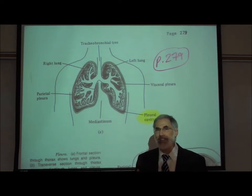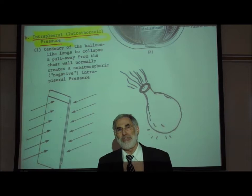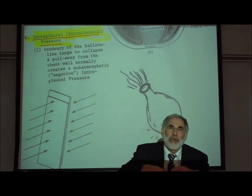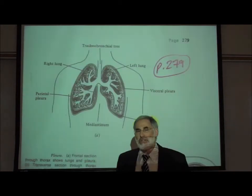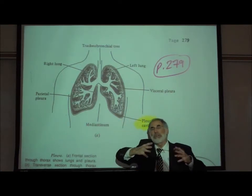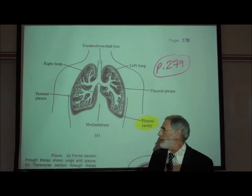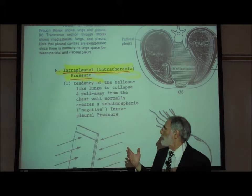Because of the elastic nature of the lungs, the lungs are trying, just like a balloon, to collapse. The elastic nature of the lungs is such that it wants to let the air out and collapse. In contrast, the chest wall actually wants to expand. So we have the lungs trying to collapse and the outer chest wall trying to expand — these two structures are trying to pull away from one another. That actually creates a sub-atmospheric pressure in the pleural cavity. The tendency of the balloon-like lungs to collapse and pull away from the chest wall will normally create a sub-atmospheric or negative intrapleural pressure.